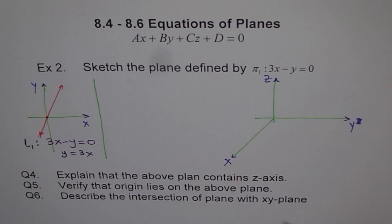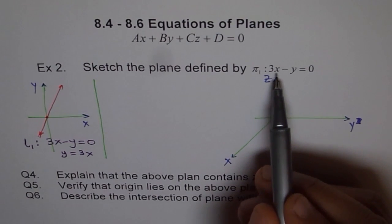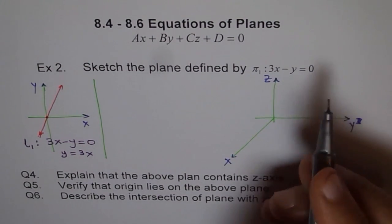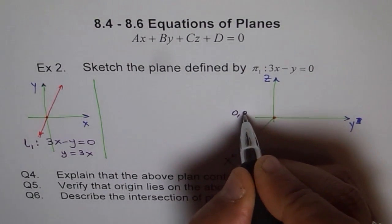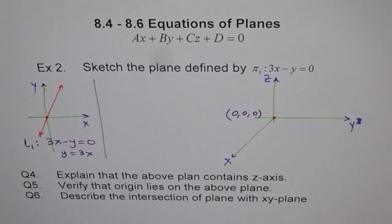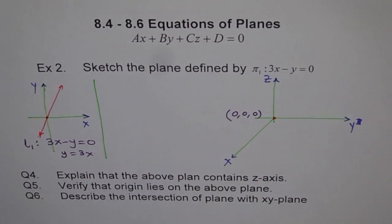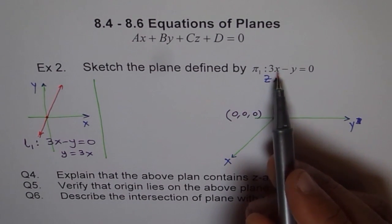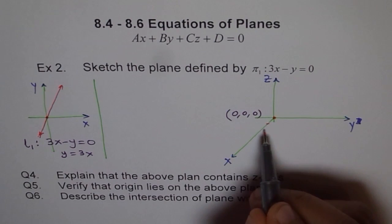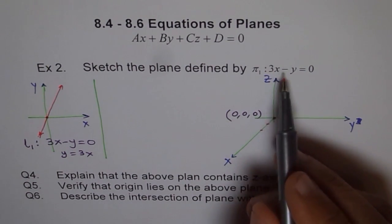To draw a plane we basically need three points, or we need two lines and a point. One point is very clear to us: if I take x as 0 then y is 0, which means the origin is on the plane. So that is our first point: (0, 0, 0). Now let's take some more points. If I put x equals 2, then what is the value of y?